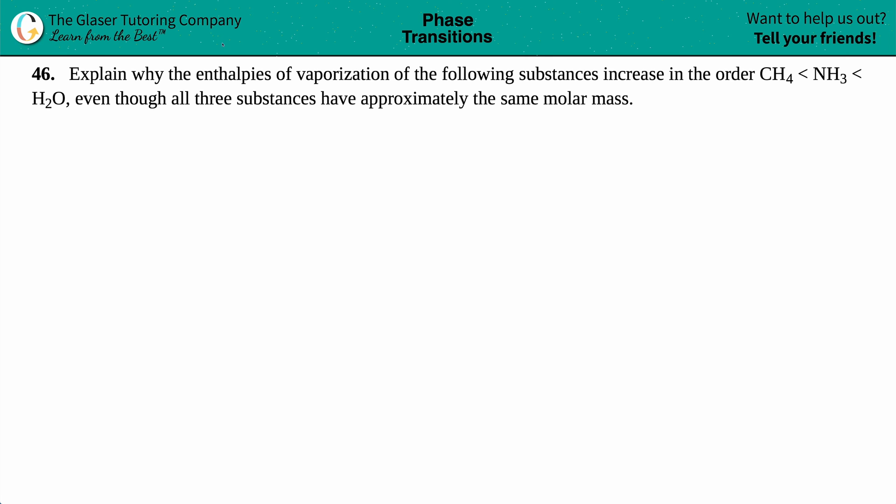Number 46, explain why the enthalpies of vaporization of the following substances increase in this order. So we have methane, which is CH4, then comes ammonia, which is NH3, and then comes H2O water, even though all three of these substances have approximately the same molar mass.